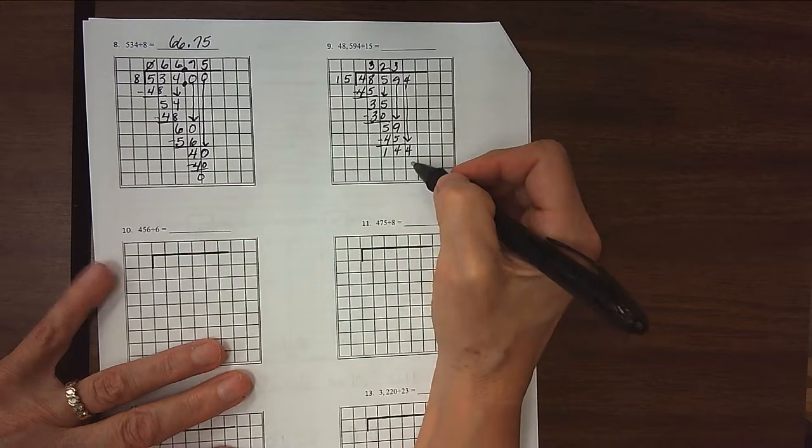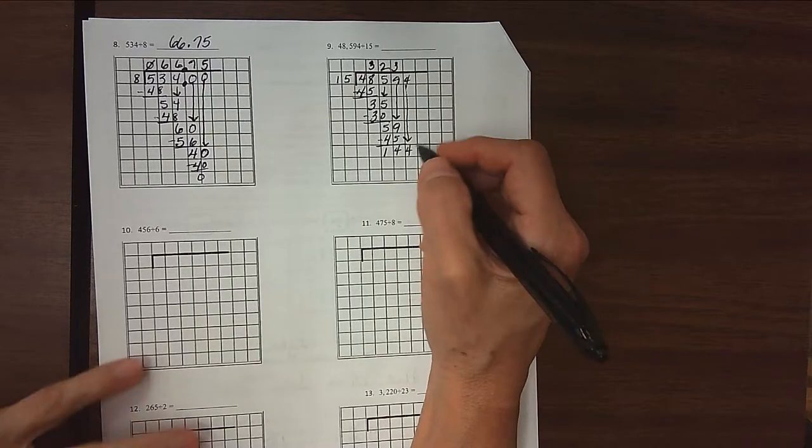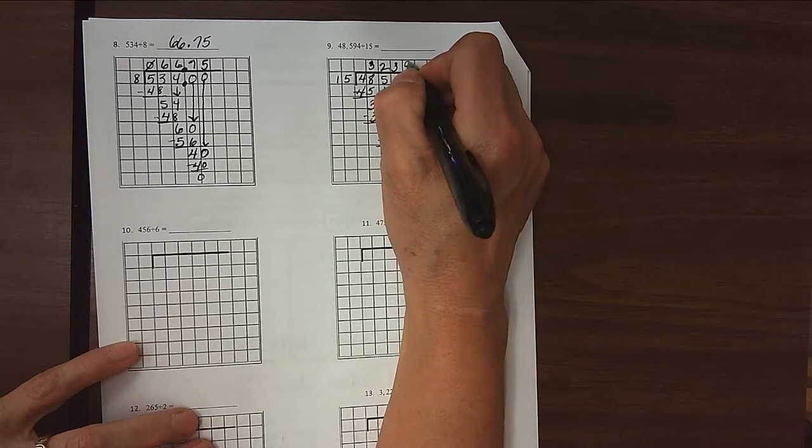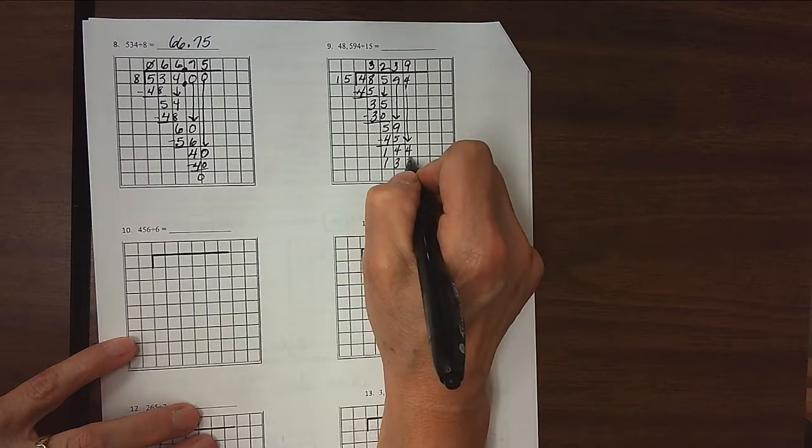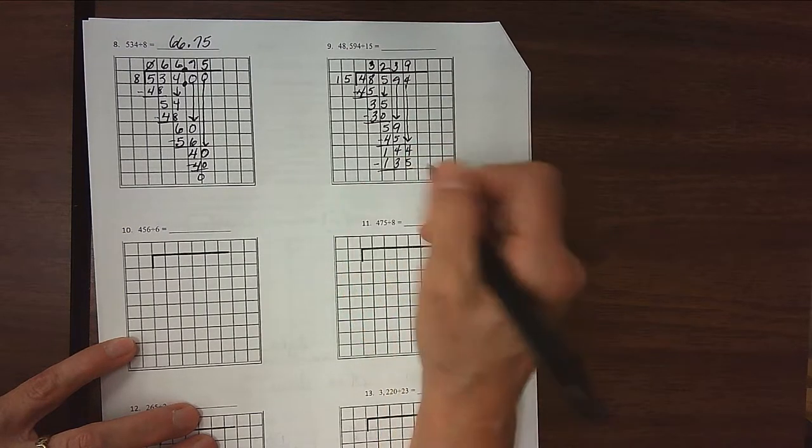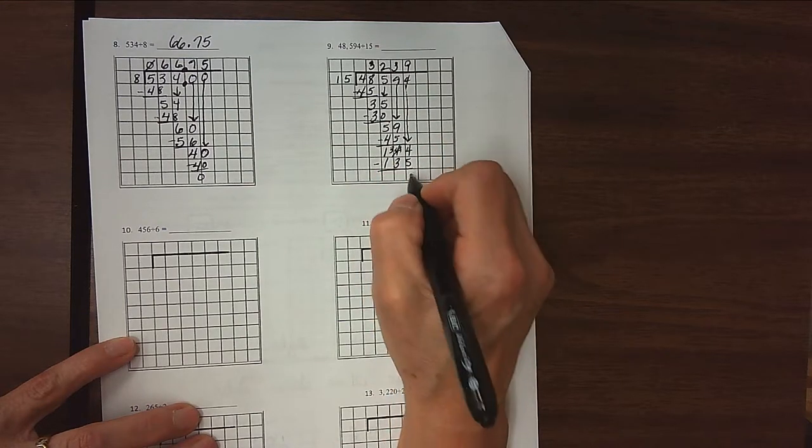And 15 will go into 144, that's almost 10 times because 144 is close to 150. So we'll back that back a little bit and just say 9 times. And sure enough, when I multiply 9 times 15, I get 135. Do that subtraction. I can't take 5 away from 4. Borrow over here, make that a 14. Get a 9.